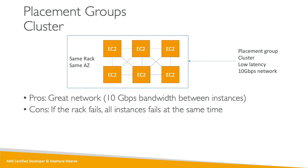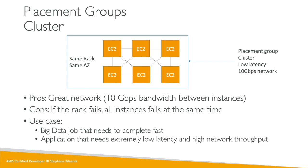So when would we use this? The benefit is great network performance. For example, a big data job that needs to complete very fast, or an application that needs extremely low latency and high network throughput where we're willing to take on the risk of failure. It's not for every application, but if your application needs super high bandwidth and low latency, the cluster placement group is a nice way of doing it.